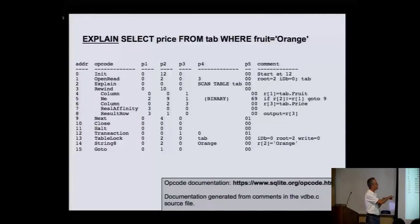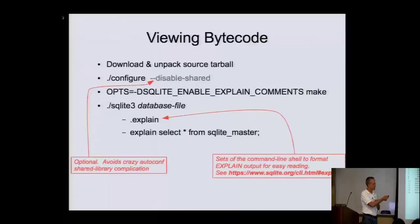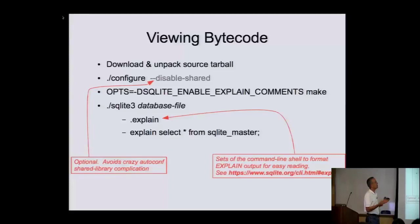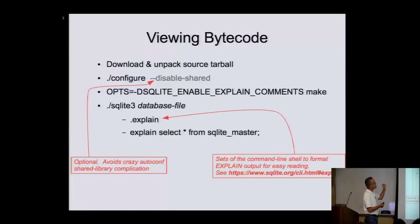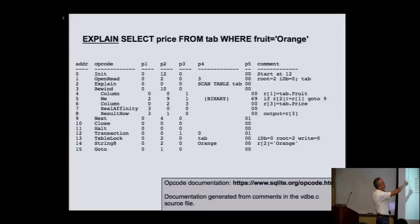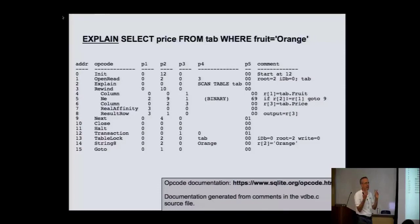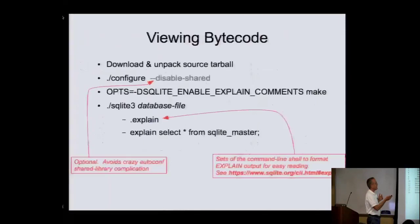If you want to study the bytecode SQLite generates, you need a custom build. Get the tarball, do configure — I like to add disable-shared to avoid confusing shared library scripts — and before you do make, there's an extra C preprocessor define you need to give it. That adds comments on the far right that help explain what each opcode is doing. By default those are not generated because they take up space and CPU cycles, but if you're debugging they're very useful.